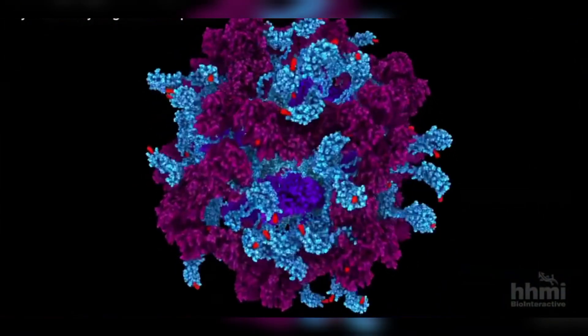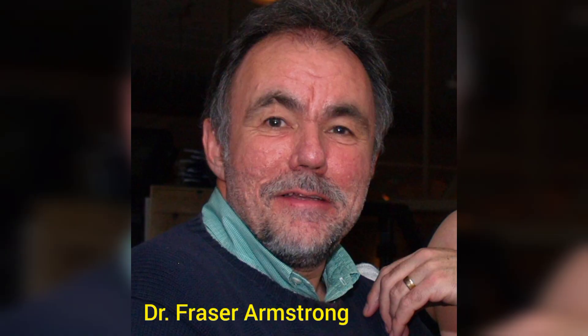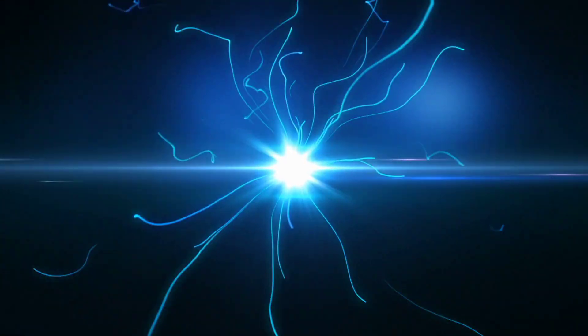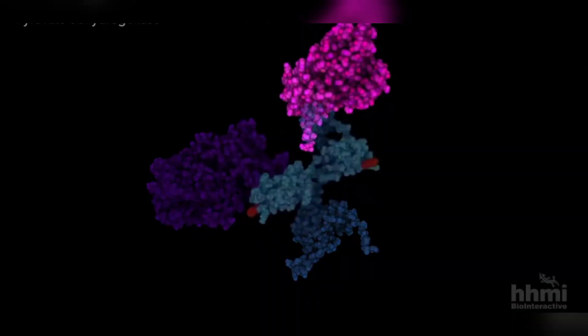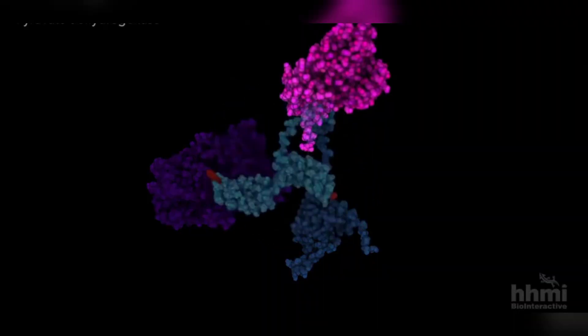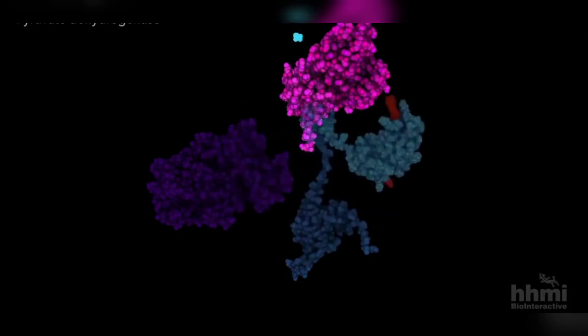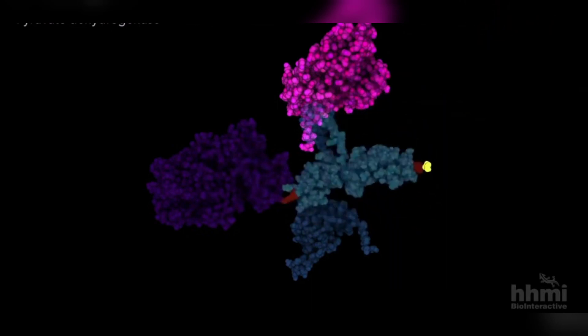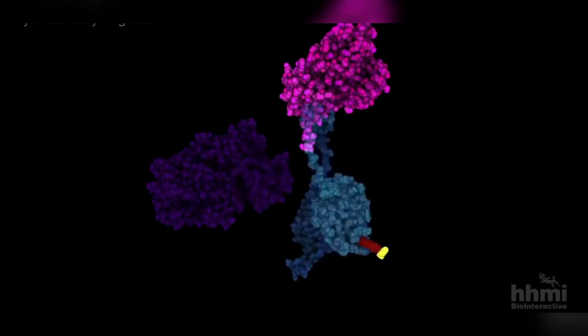The HUC enzyme was discovered by a team of researchers led by Dr. Fraser Armstrong at the University of Oxford in 2019. The concept of generating electricity from air may seem like science fiction, but it has become a reality with the discovery of this enzyme. The HUC enzyme is a protein complex that can convert atmospheric hydrogen into electrical energy. This breakthrough has the potential to revolutionize the energy industry and pave the way for clean and sustainable energy sources.